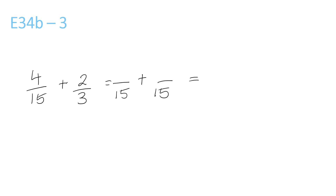15 and 3 — the lowest number that they both go into is 15, because 15 times 1 is 15, and 3 times 5 is 15. Now we keep the 4 over 15, because it's already over 15. But the 2 over 3, we have to times the top and bottom by 5. 2 times 5 is 10. 4 plus 10 is 14 over 15.